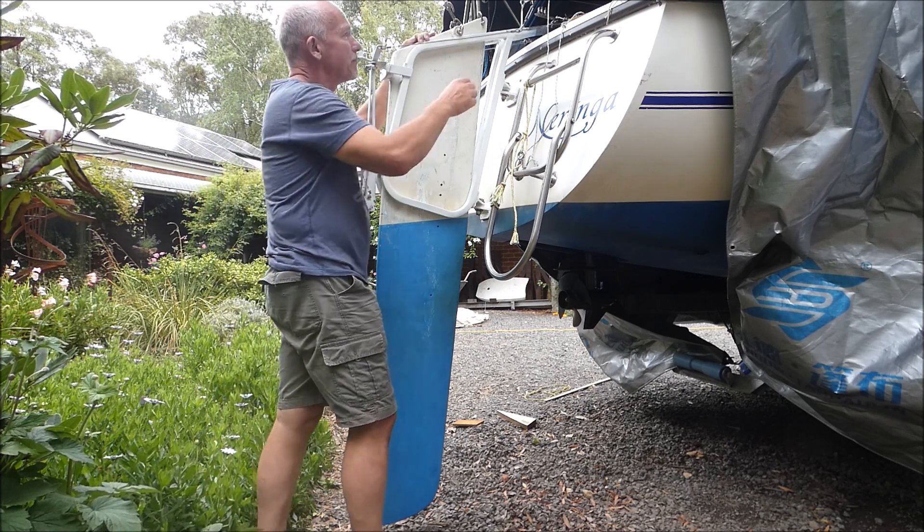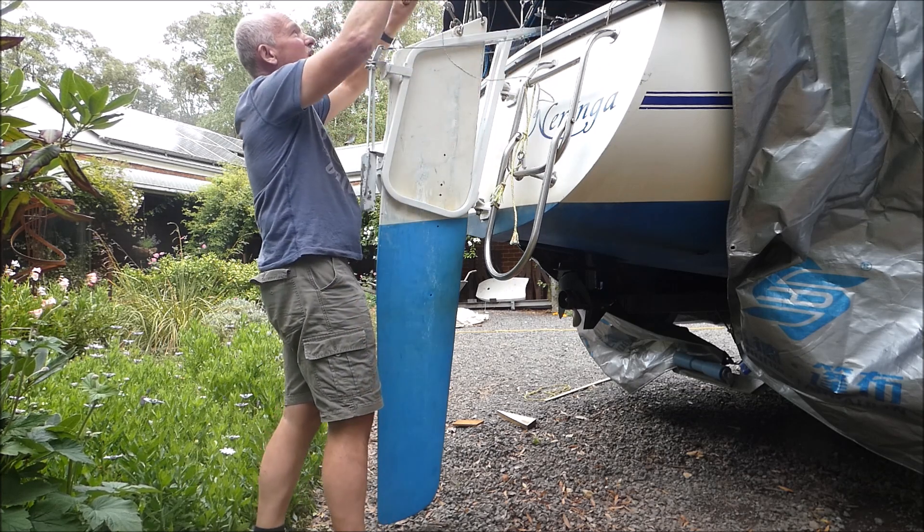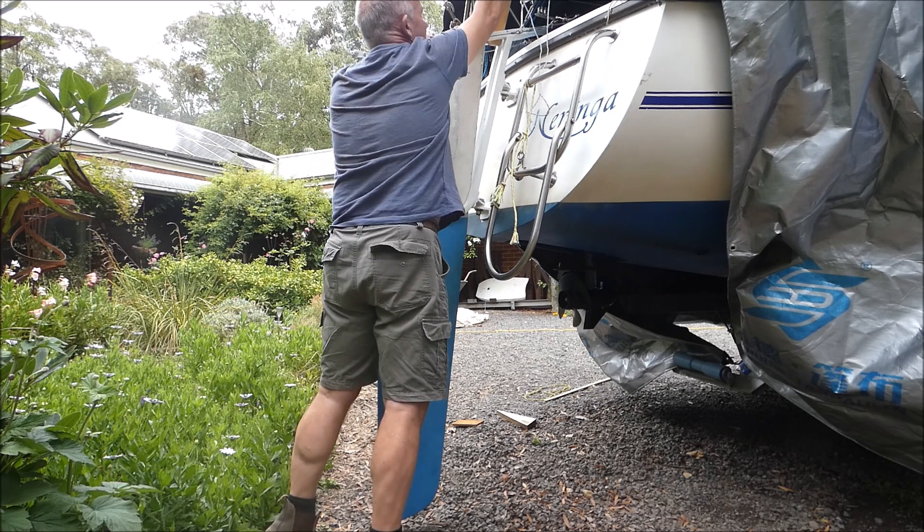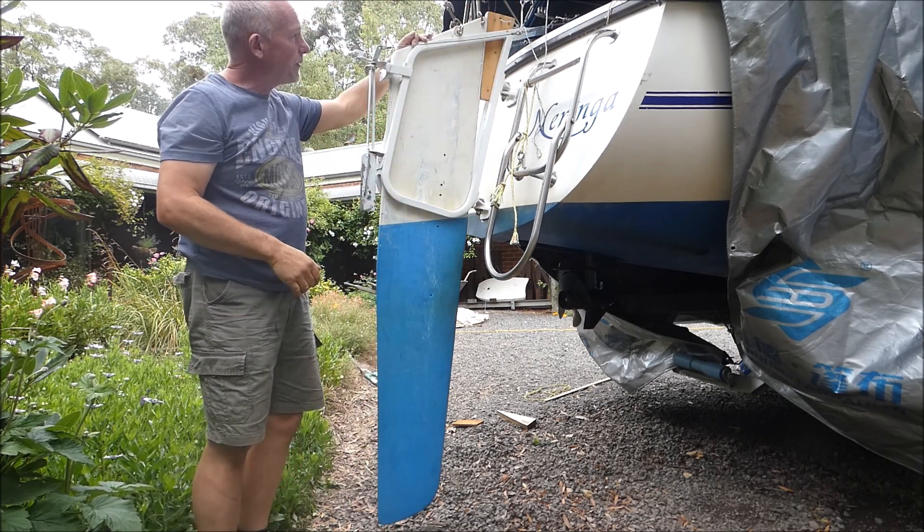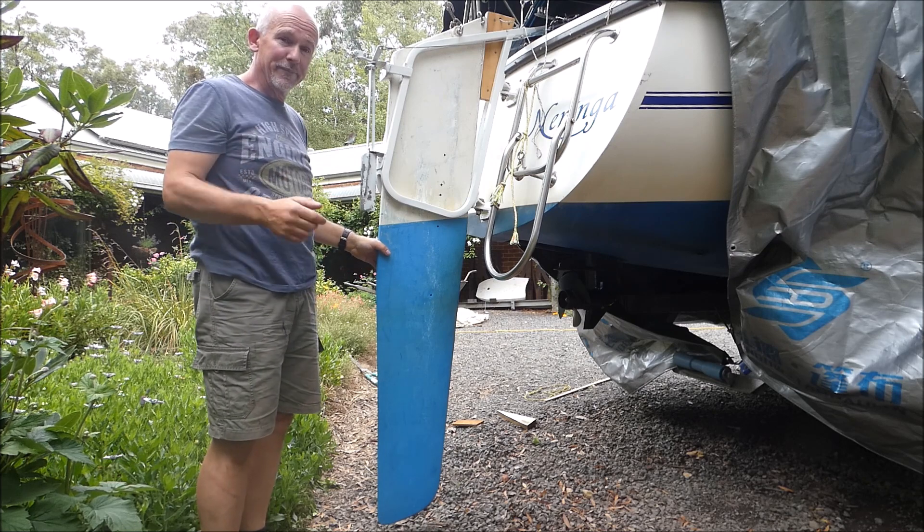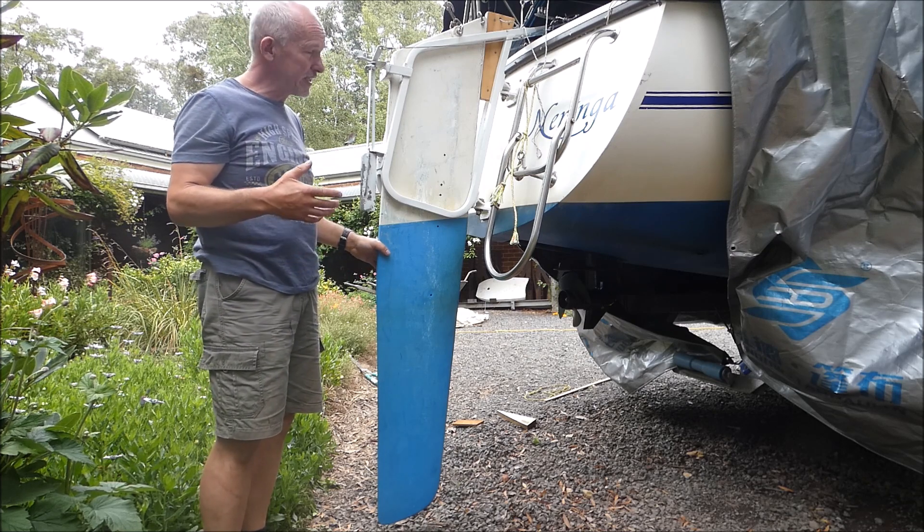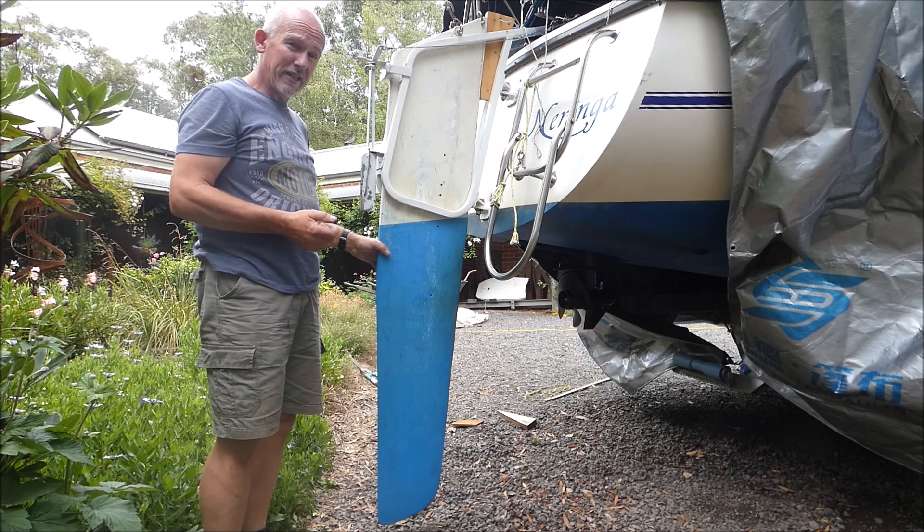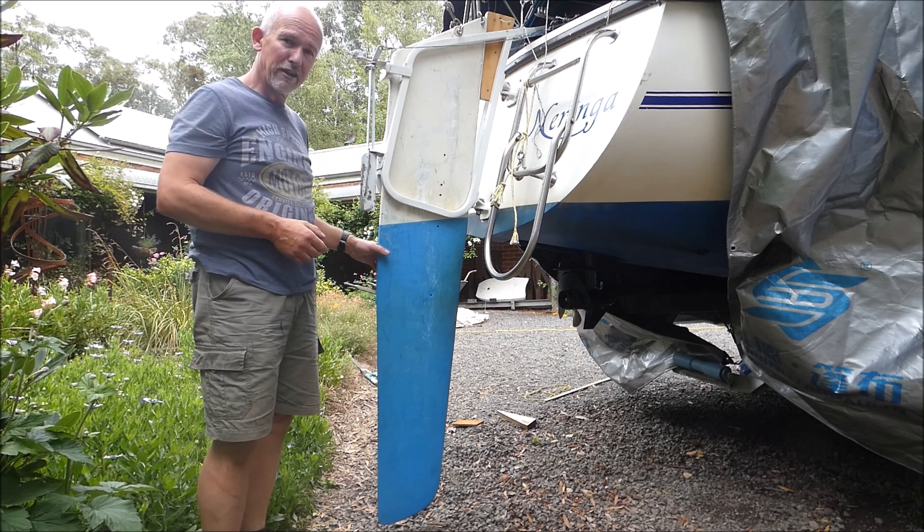And to hold the rudder in place once it's rotated backwards, I've simply made a varnished wooden wedge, and that goes into the top of the rudder there, and that holds the rudder very securely in that position. So there you go, a very simple way of actually getting a balanced rudder on an RL28, and it can be applied to other trailer sailors as well with similar sorts of rudder arrangements.